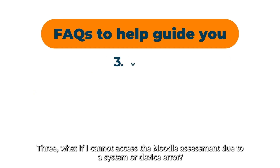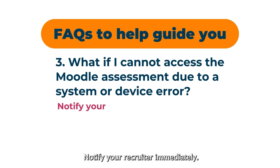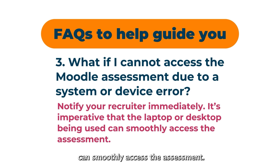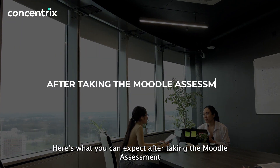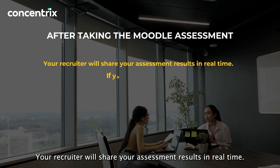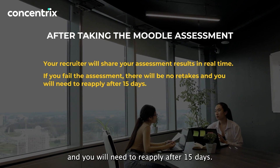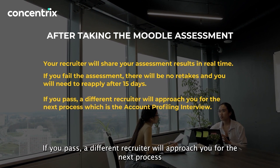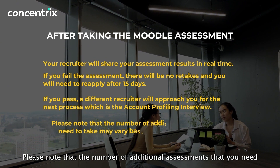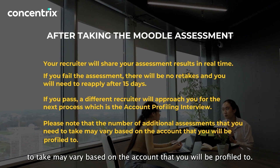Third: What if I cannot access the Moodle Assessment due to a system or device error? Notify your recruiter immediately — it's imperative that the laptop or desktop being used can smoothly access the assessment. Here's what you can expect after taking the Moodle Assessment: your recruiter will share your assessment results in real time. If you fail the assessment, there will be no retakes, and you will need to reapply after 15 days. If you pass, a different recruiter will approach you for the next process, which is the Account Profiling Interview. Please note that the number of additional assessments you need to take may vary based on the account you will be profiled to.